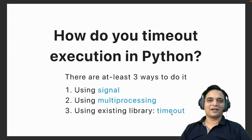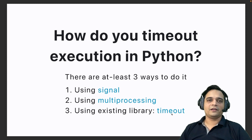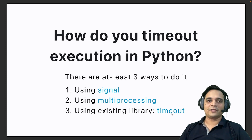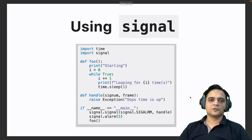Today we'll be looking at how to timeout execution in Python. There are three ways to do it: the first two use built-in modules from the Python standard library — signals and multiprocessing — and the third way is to use a third-party library called timeout-decorator. Timeout-decorator under the hood uses the signals and multiprocessing modules.